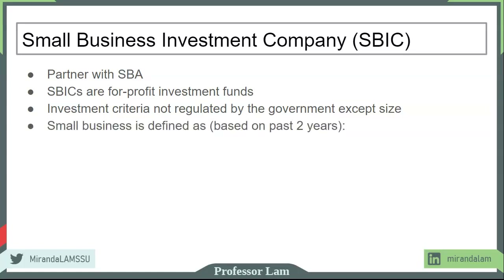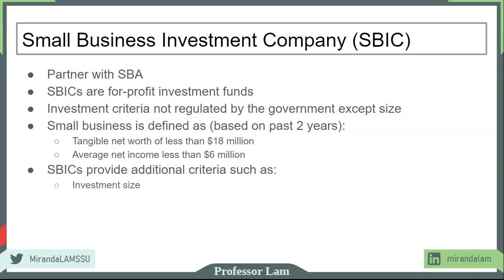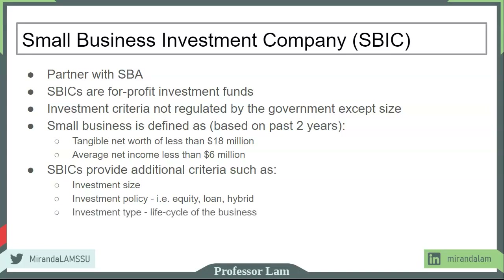Based on the last two years, eligibility is determined by either net worth — currently less than $18 million — or net income, which must be less than $6 million. Each SBIC can include additional criteria similar to those of angel investors or venture capital firms: the amount of investment they're interested in, whether they invest as equity, loans, or convertible hybrids, the life cycle stage of the business, whether the business has revenue, and industry or geographic preferences.